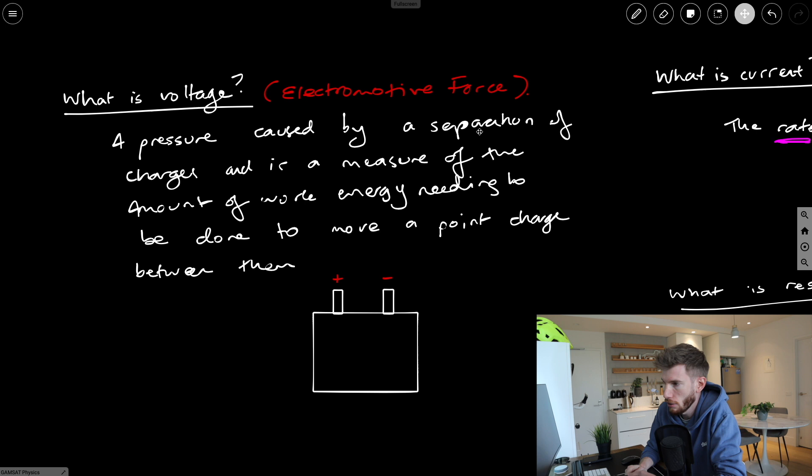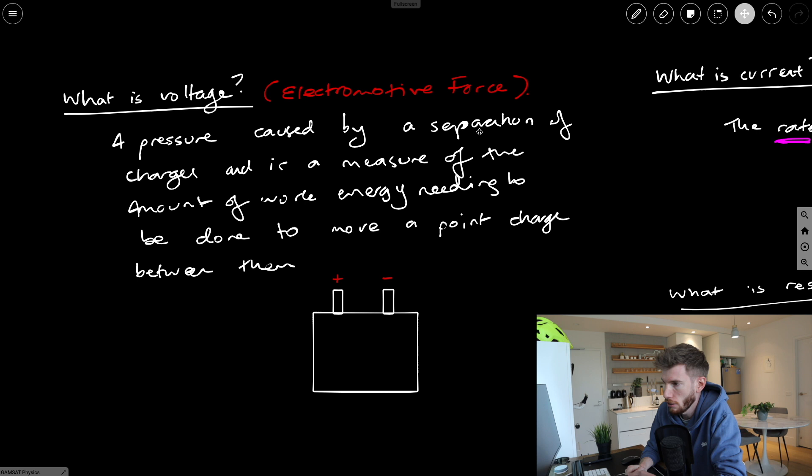Then the second thing is what is voltage? So this one's a little bit of a trickier one out of the four. So we can think of it, it's often described as a pressure that is caused by a separation of these charges now. So if we hold them apart from each other, then we can end up with a pressure or a force that's going to try and push charged particles through this space. And that's what we're measuring with voltage.